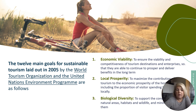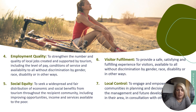Third is biological diversity, which supports natural areas, habitats and wildlife. Number four is about employment quality — strengthening the number of people and jobs supported by tourism that are sustainable, fairly paid and inclusive. Number five is social equity — distributing the economic and social benefits of tourism to the community, including opportunities, income and services available to the poor.